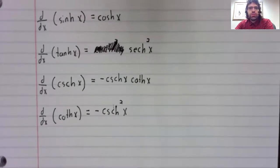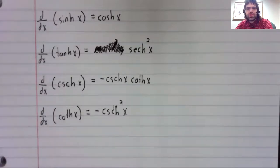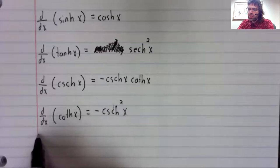So the two trig functions that are noticeably absent from this list are the hyperbolic cosine and the hyperbolic secant.